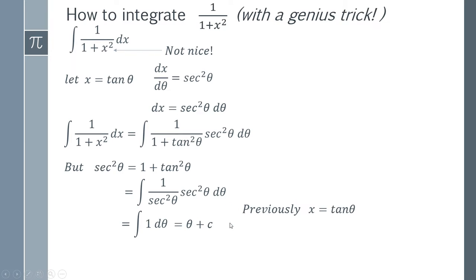So previously we used the substitution that x equals tan theta. We need to rearrange this for theta, and we simply take the inverse tangent of both sides to get theta equals the inverse tangent of x. So we can replace theta here with the inverse tan of x, and that gives us our final answer.